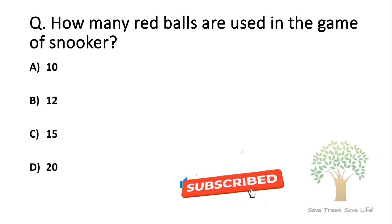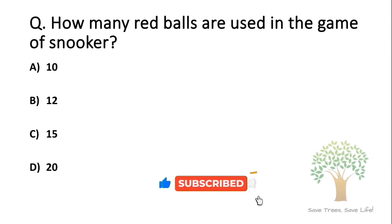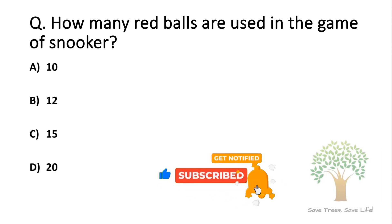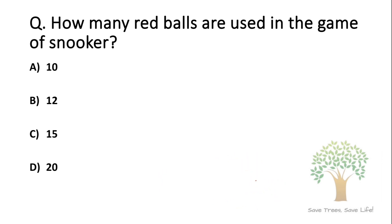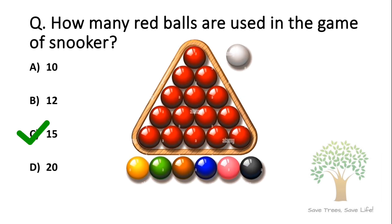How many red balls are used in the game of snooker? Option A: 10. Option B: 12. Option C: 15. Option D: 20. The answer is Option C, 15.